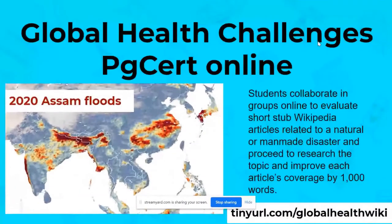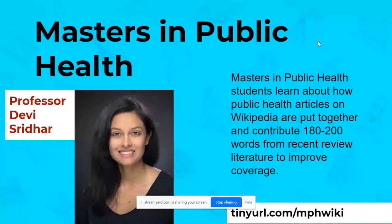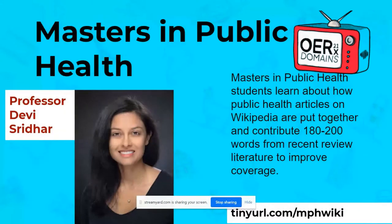Students on the Global Health Challenges postgraduate certificate online collaborate in groups to evaluate short stub articles of less than 300 words related to a natural or man-made disaster, and proceed to research the topic, discussing with each other online and improving each article's coverage by 1,000 words by the end of the four-week assignment. We've also worked with Professor Devi Sridhar and Dr. Felix Stein on the Masters in Public Health, where Masters students added, improved or created new content for global public health related articles, and showed how crucial it is to make medicine and information on global health more accessible.